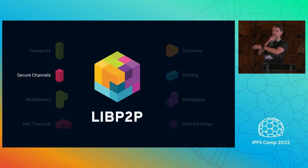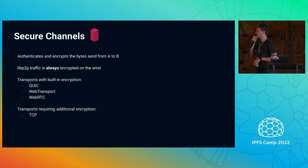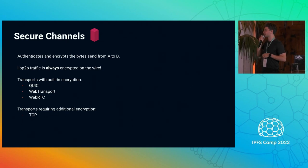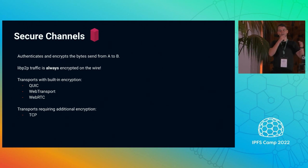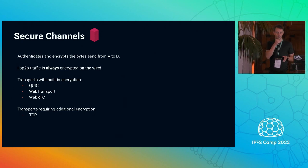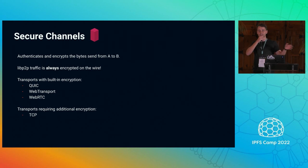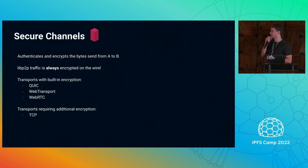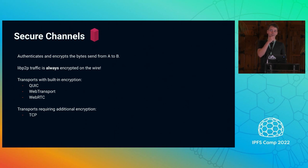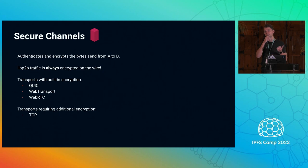Once we know how to send bytes from A to B for our chat application, we want to secure those bytes. Secure channels give us authentication and encryption for the bytes we send from A to B. The number one rule in libp2p is no traffic ever touches the wire unencrypted — everything is always encrypted. Some transports already give that for free, like QUIC and WebTransport, but for others like TCP we have to bring our own encryption, such as Noise and TLS.